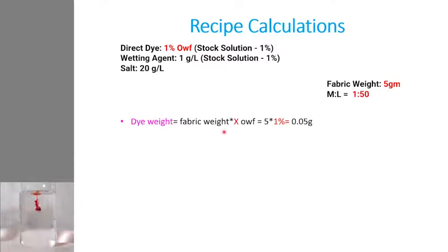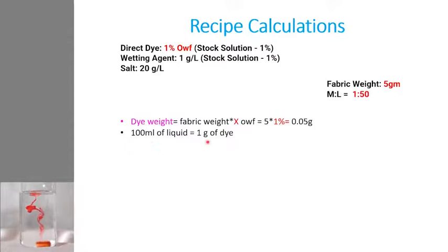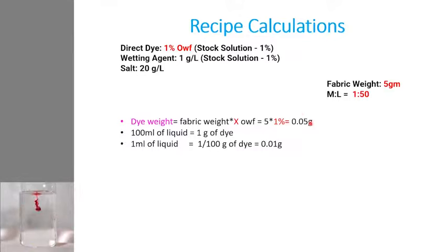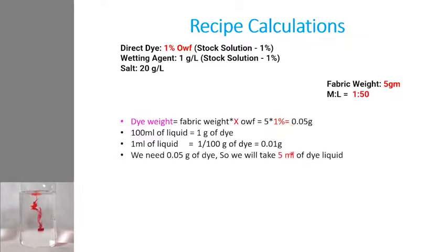Using stoichiometric calculations: if 100 ml of stock solution contains 1 gram of dye, then 1 ml contains 0.01 g. Since we require 0.05 g of dye, we need 5 ml of this stock solution. So taking 5 ml of the 1% stock solution gives us exactly 0.05 g of dye. These calculations are straightforward and you should be familiar with them.